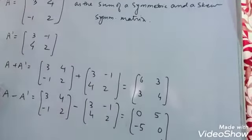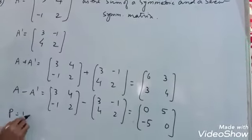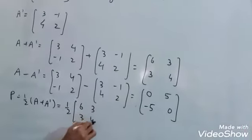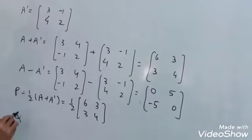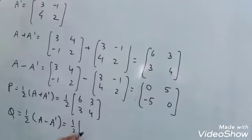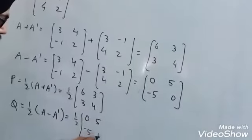Let's find P, which is half of A plus A transpose, which is half of [6, 3; 3, 4]. And Q, half of A minus A transpose, which is half of [0, 5; -5, 0].